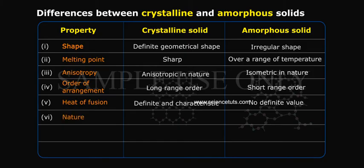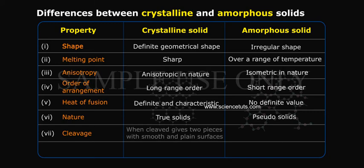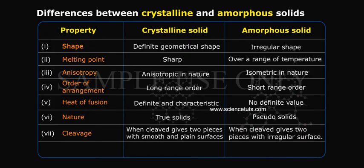Property 6: Nature. Crystalline solid — true solids. Amorphous solid — pseudo solids. Property 7: Cleavage. Crystalline solid, when cleaved, gives two pieces with smooth and plain surfaces. Amorphous solid, when cleaved, gives two pieces with irregular surfaces.